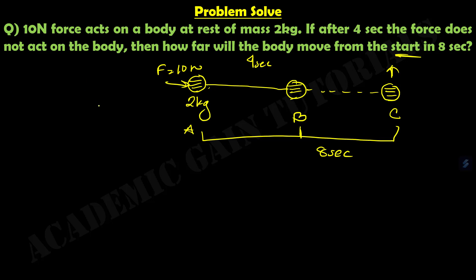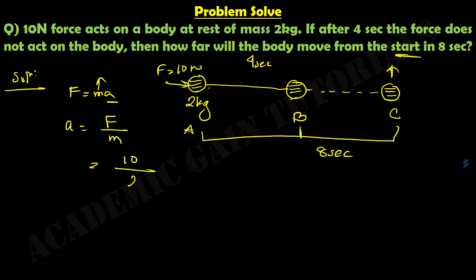First, by Newton's second law, we know F equals MA. We know the mass of the body and the force applied, so we can find the acceleration. A equals F divided by M. Here, F is 10 Newton and M is 2 kg, so the acceleration will be 5 meter per second square.